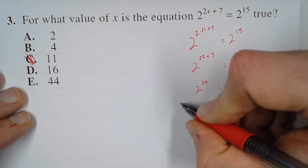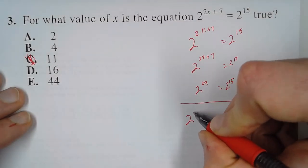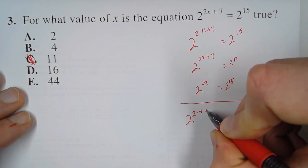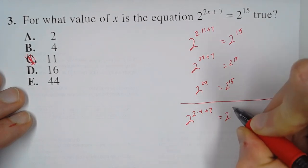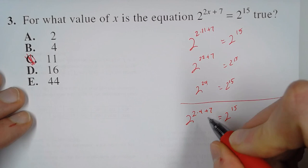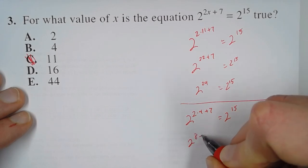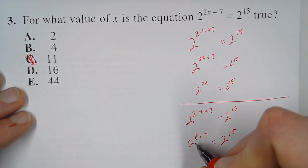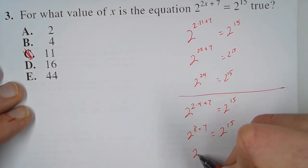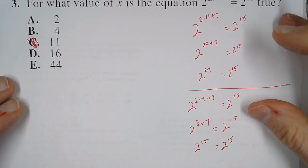We try again. This time we plug in 4: 2^(2×4+7) = 2^15. So 2 times 4 is 8. We have 8 plus 7, that equals 15. So there is our answer.